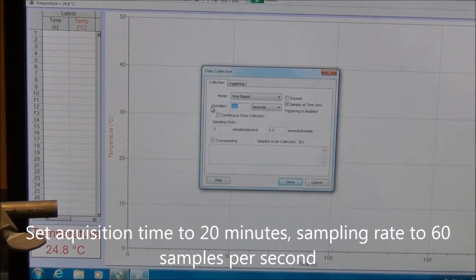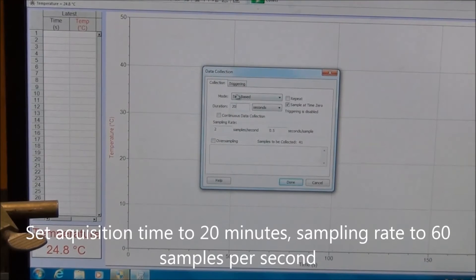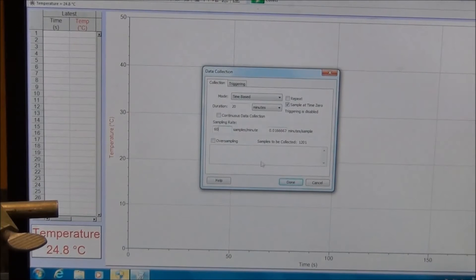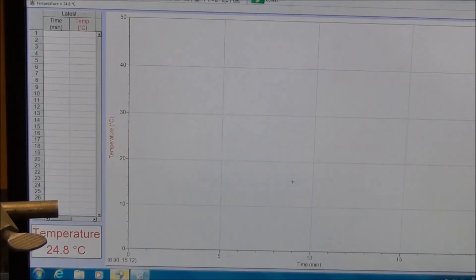This time to 20 minutes. We may not need 20 minutes, just in case we need that. And set up your sampling rate at 60 samples per minute. And then we are ready to go.